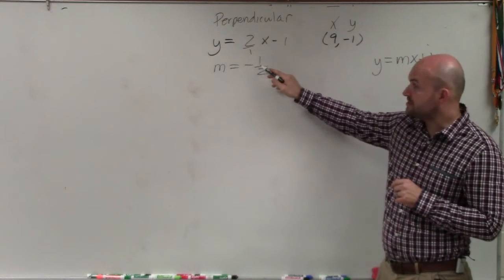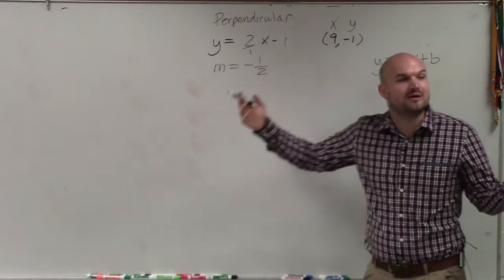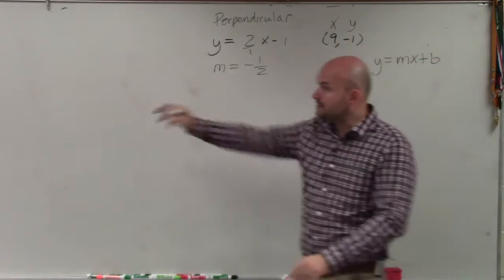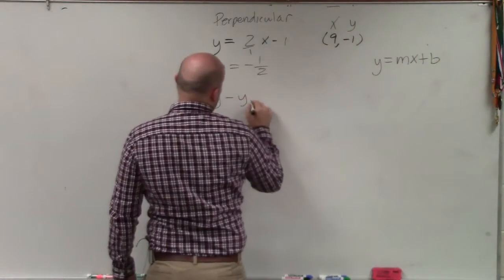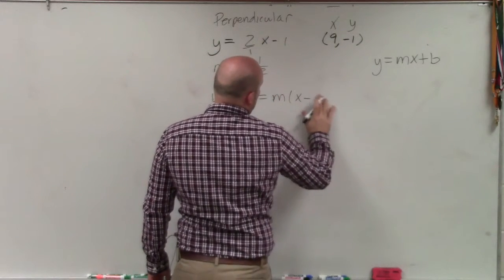So we now know what the slope is, the new slope, but we don't know what the point is. And let's say the problem says write it in point-slope form and then write it in slope-intercept form. Well, remember, my point-slope equation looks like this: y minus y1 equals m times x minus x1.